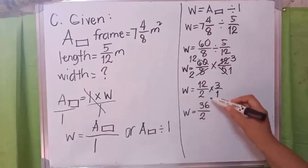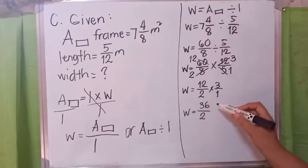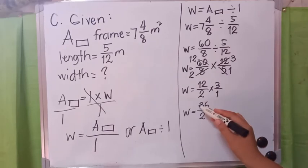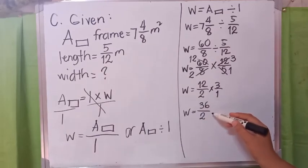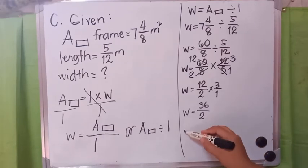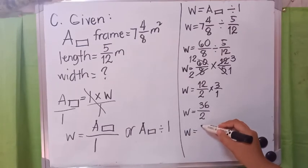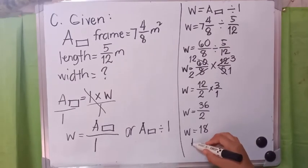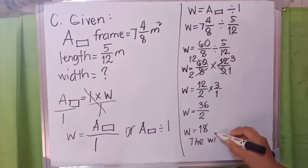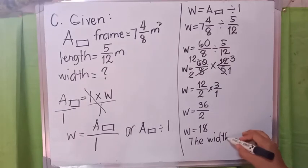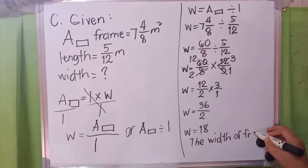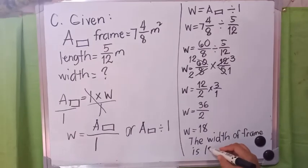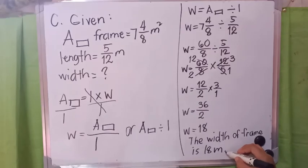Our answer 36 over 2 is an improper fraction, so we simplify it. Half of 36 is 18. So the width of the frame is 18 meters.